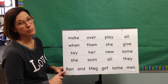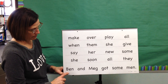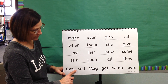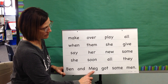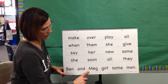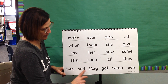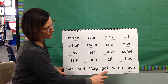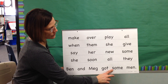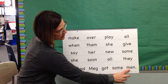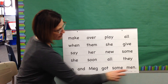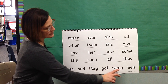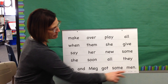Get ready for our sentence. We're going to blend. Ben. Word: Ben. And. Blend: Egg. Word: Meg. My turn: Ben and Meg. Blend: Got. Word: Got. Word: Some. Blend: And. Word: Men. My turn: Ben and Meg got some men.